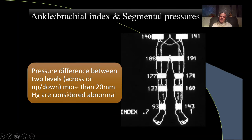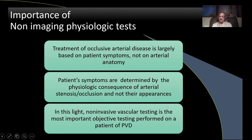We can also take segmental pressures at the upper thigh, lower thigh, upper calf, and lower calf. A fall in segmental pressure gives a clue as to where the disease is. If there's a fall at one point, the disease is likely to be proximal to that point. With these clues, we go ahead.